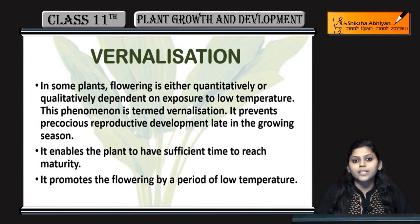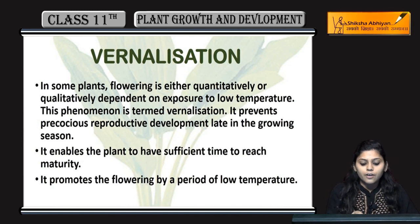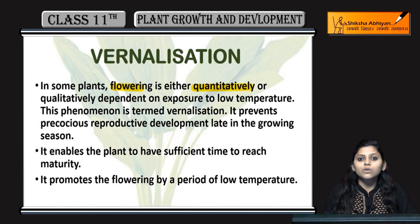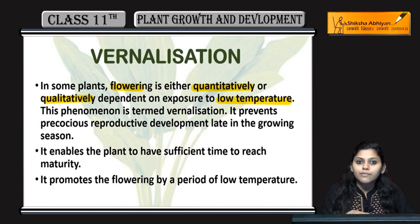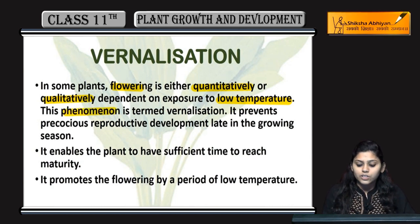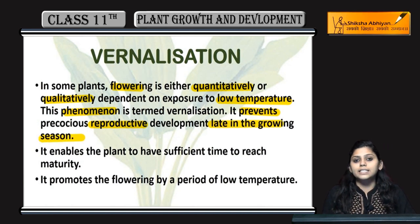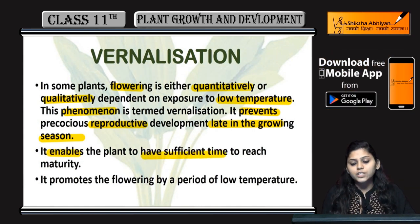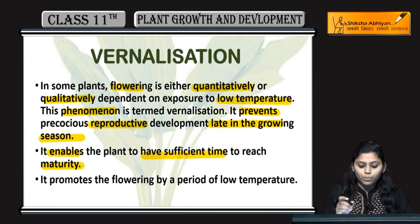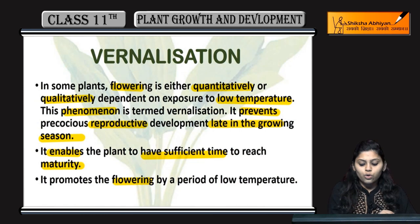Now coming to the last topic of this chapter, that is vernalization. This phenomenon is termed as vernalization. It prevents precocious reproductive development late in the growing season. Seasonal varieties are very useful in these cases — it enables the plant to have sufficient time to reach maturity and promotes flowering by a period of low temperature.